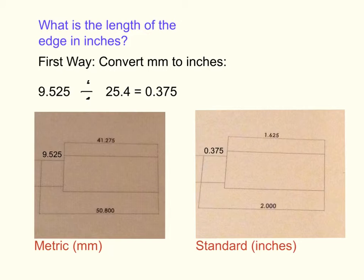But what if we wanted to find the length of this outside edge in inches? There are a couple different ways to go about this, but the first way is, since we already subtracted to find the length of that edge in millimeters, 9.525, we can take 9.525 and then convert it into inches. So 9.525 divided by 25.4 is 375 thousandths of an inch.